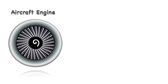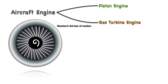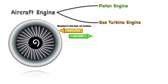Aircraft engines are basically of two major types: piston engine and gas turbine engine. All aircraft engines work on the basic principle of Newton's third law of motion, which is every action has an opposite and equal reaction. In aircraft engines, when the air is pulled in and then pushed out with force, this is the action, and as a reaction the aircraft moves forward. This force is called thrust.